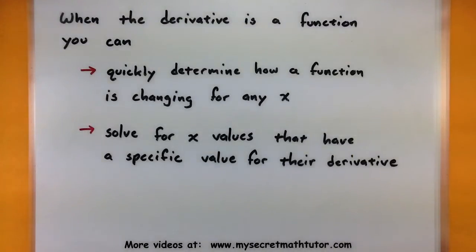Now let me give you some quick pointers on why the derivative is going to be so important as a function. If you have the derivative as a function, you can quickly determine how a function is changing for any given value of x. So instead of always computing and looking for that slope of the tangent line going through that giant difference quotient, you essentially just go through it once, and then you plug values into that. So it's a lot faster.